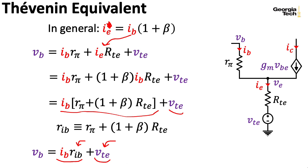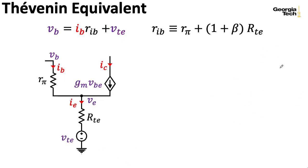So RIB is my Thevenin resistance, and VTE is my Thevenin voltage. So I can take this complicated circuit here and write it as this simple Thevenin equivalent as just a resistance in series with this voltage source VTE. And this will come in handy in computing the input resistance of common emitter and common collector amplifiers.